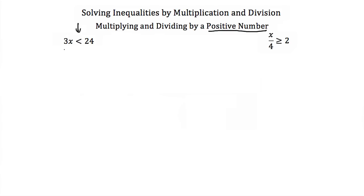So if I wanted to solve 3x is less than 24, I would just divide both sides by 3 and I would get x is less than 8. If I have x divided by 4 is greater than or equal to 2 and I wanted to solve for x, I could multiply both sides by 4 and I would get x is greater than or equal to 8.